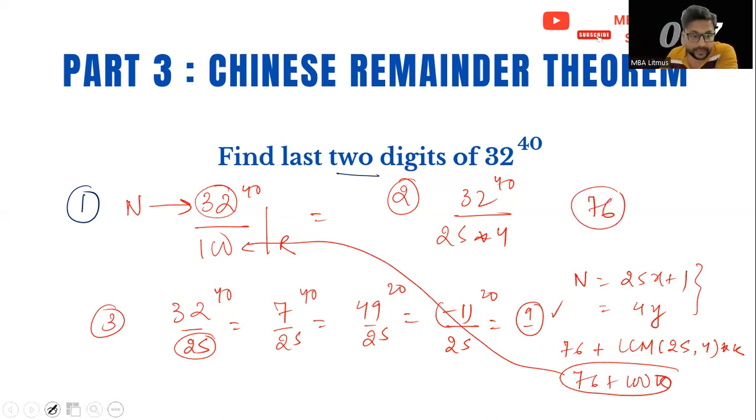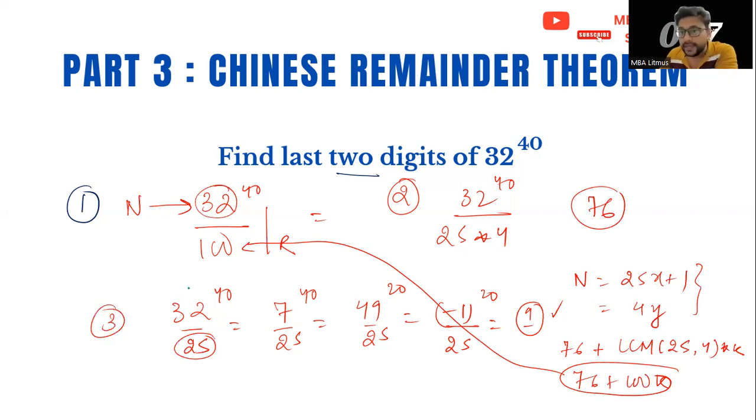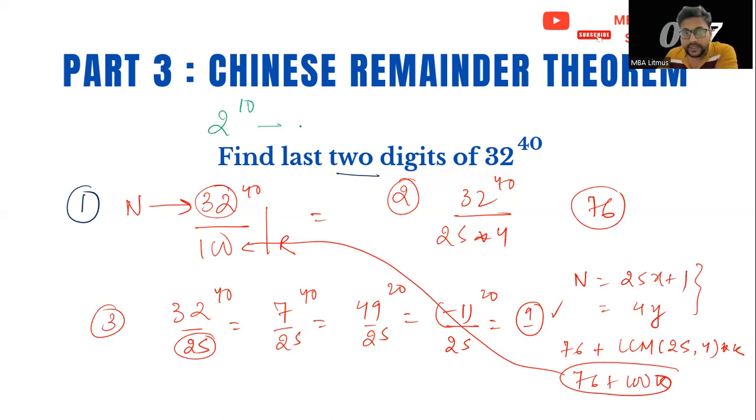One interesting funda which I'm going to give you which is going to come in handy. 2 to the power 10, you all know, is 1024. So one quick thing to remember here is 2 to the power 10 into odd number will always give you last two digits as 24, and 2 to the power 10 into even number is always going to give you 76 as last two digits. I'm hoping that this is also clear to you.